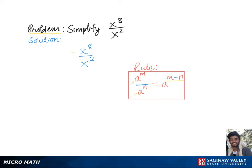Here in our problem, we have two exponents with a common base x in the form of division. So to simplify this, we'll keep the common base x and subtract the exponent in the denominator which is 2 from the exponent in the numerator which is 8, which gives us x to the 6th.